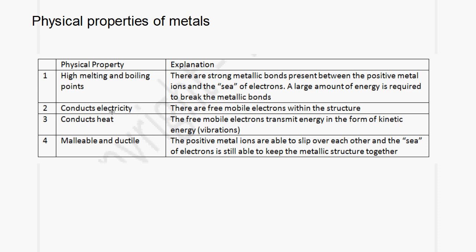The second physical property: metals conduct electricity. There are free mobile electrons within the structure, and since the electrons can move, the metal is able to conduct electricity.